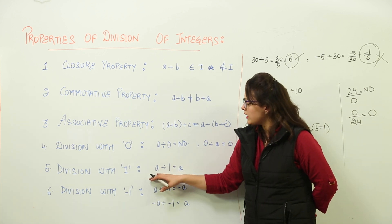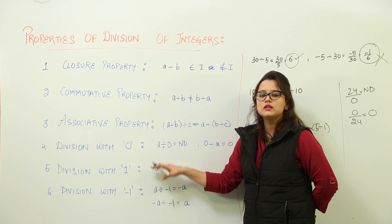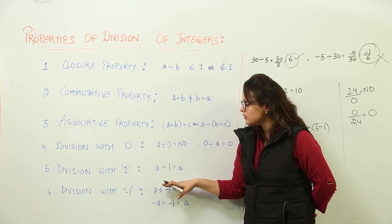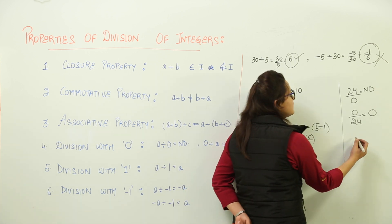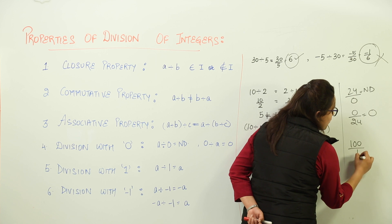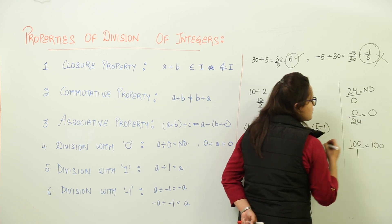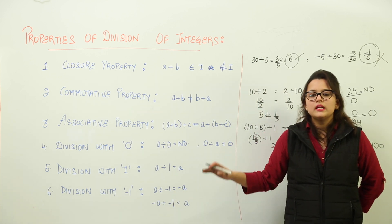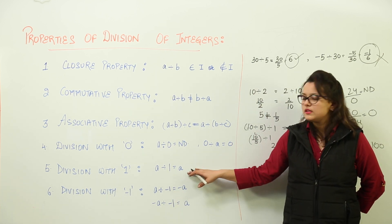Next, we have division with 1. Any integer divided by 1 gives you the same integer, because we are dividing that value into only one part. So any number divided by 1 gives us that integer itself.